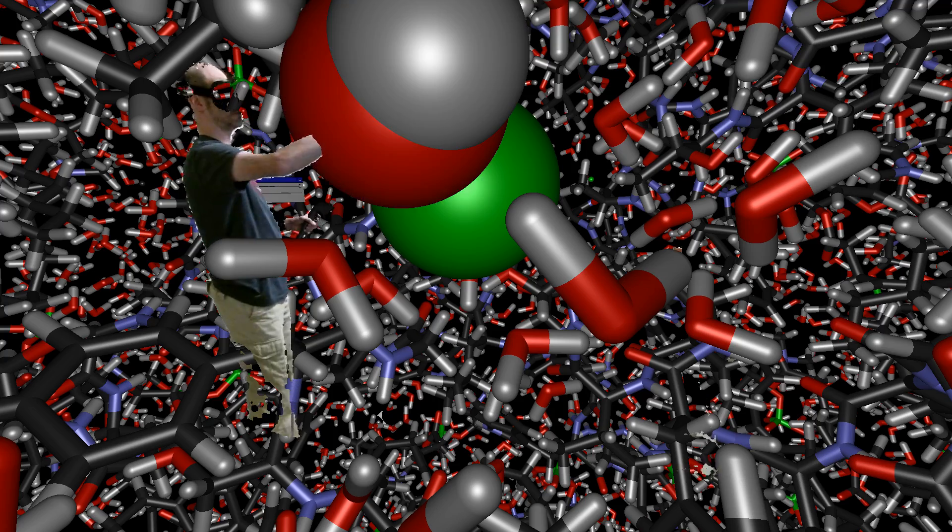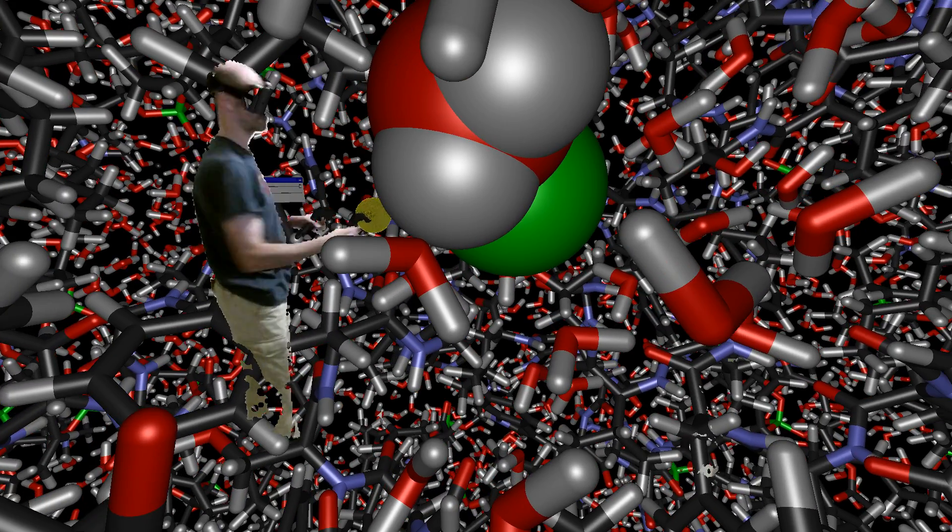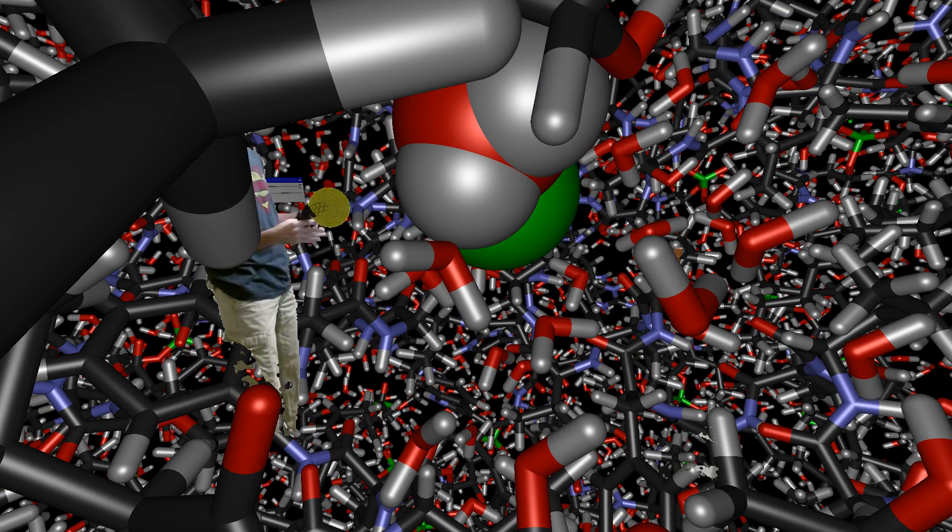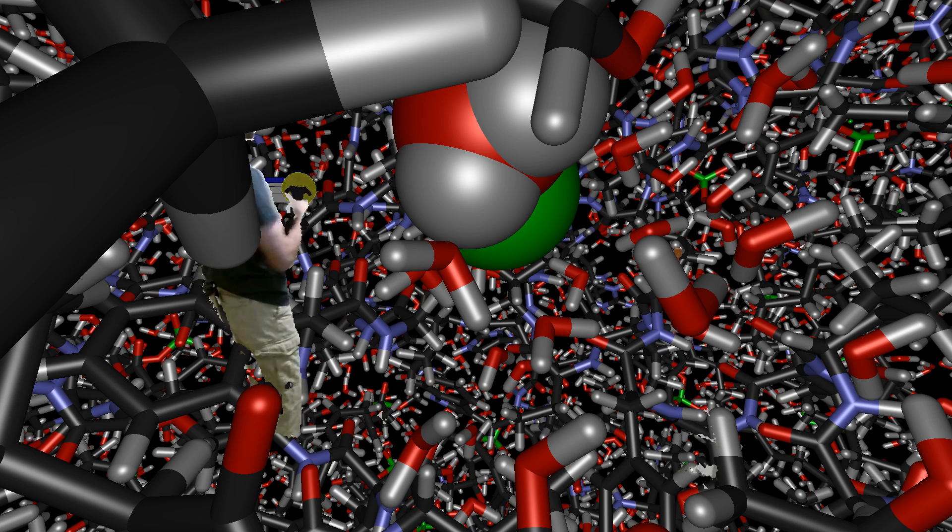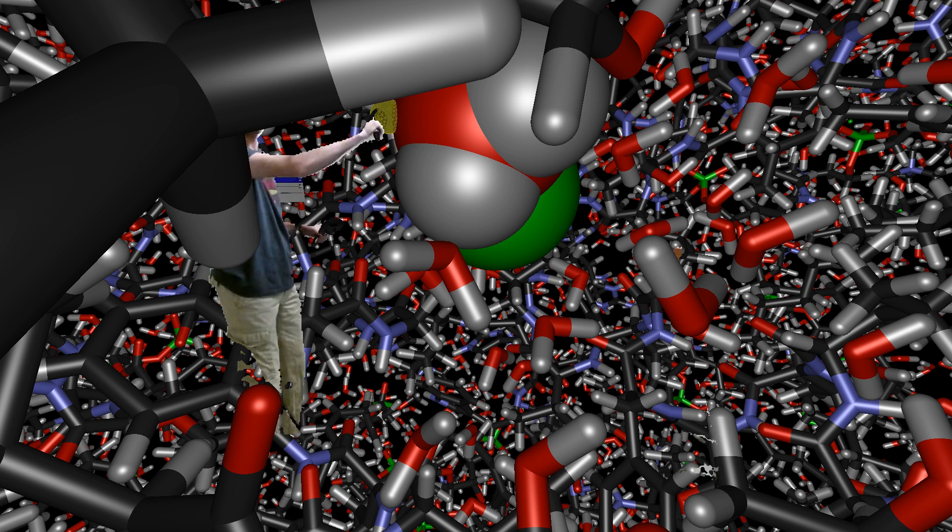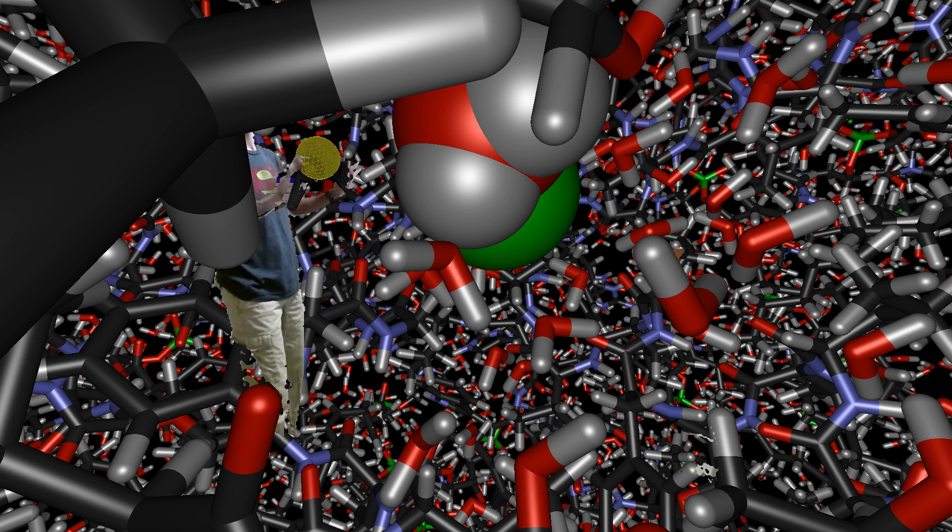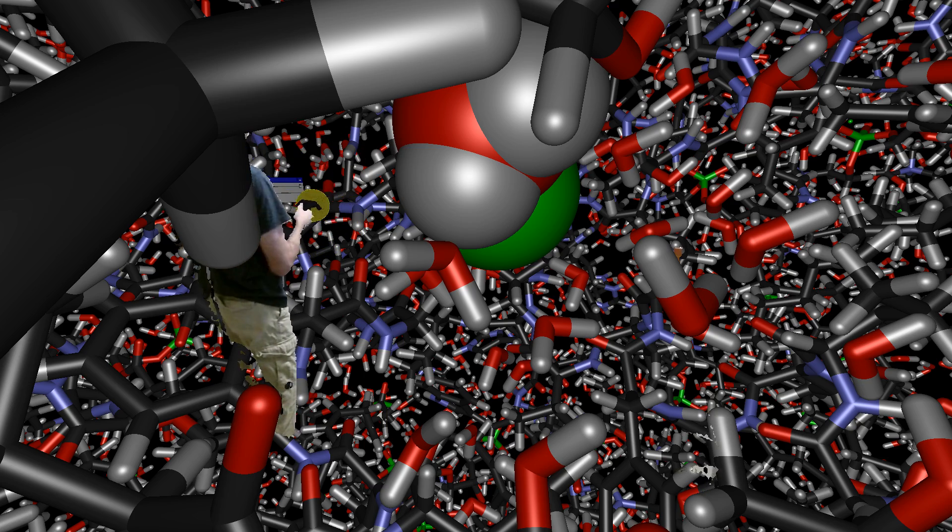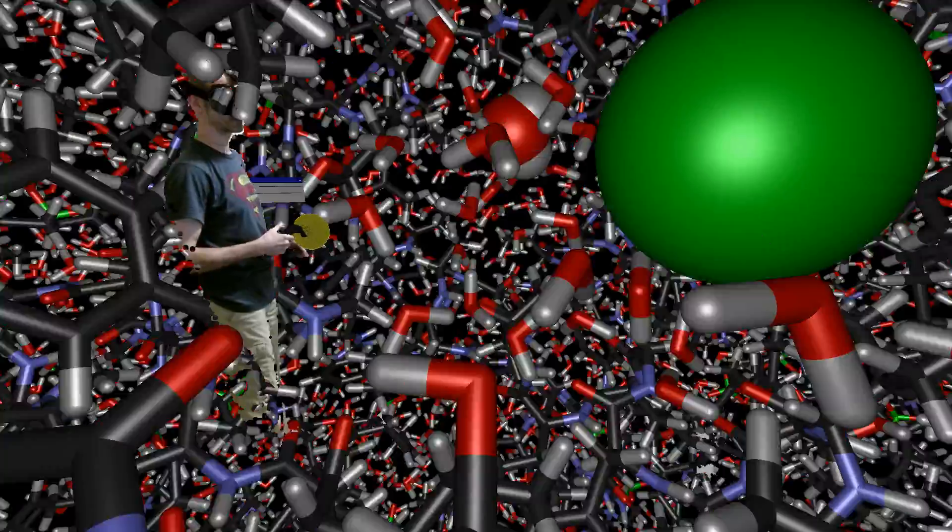So one nice thing about using VR for this purpose is that even though there's 40,000 atoms and on a flat computer screen this would look extremely cluttered, in VR I can zoom in, I can immerse myself in the simulation, and I can look at things that are close to me without much clutter. And then things that are far away just shrink away in the distance and become, I can still see them as context, but they don't disturb my view. So it is much easier to see things and to select things.